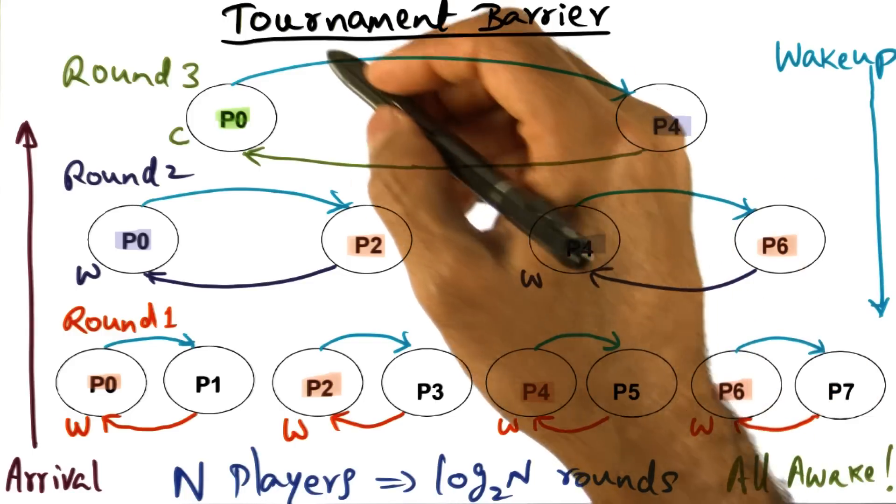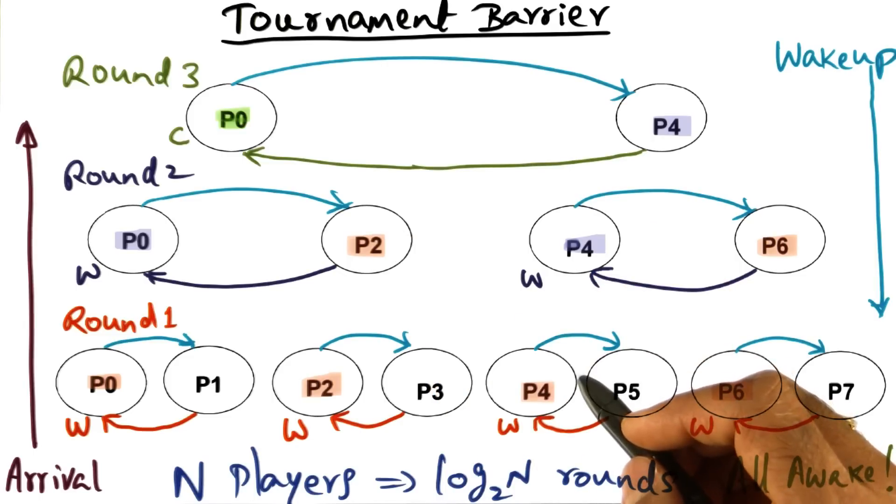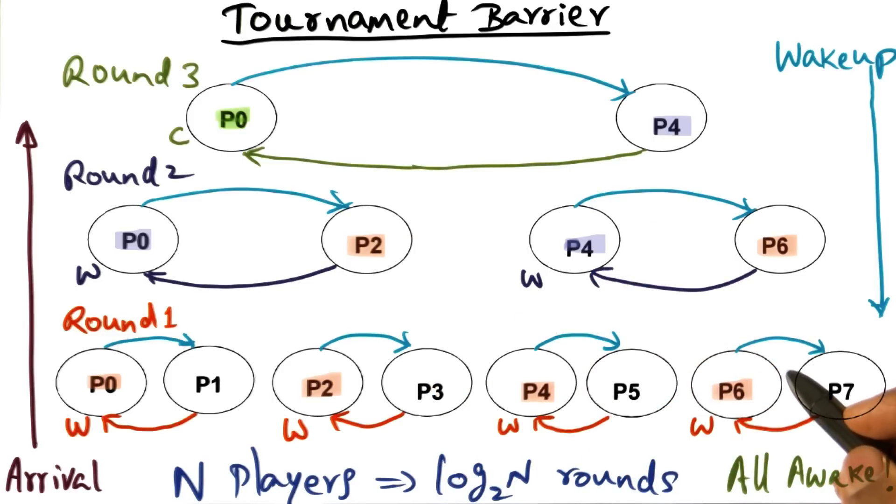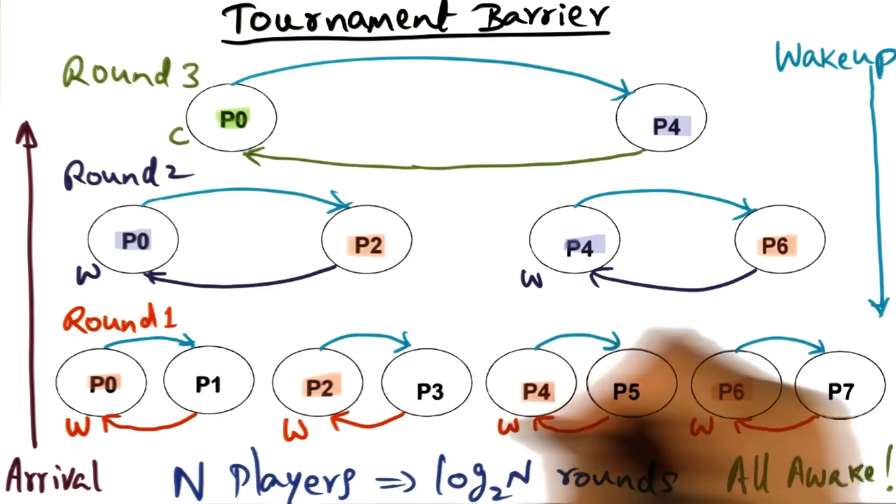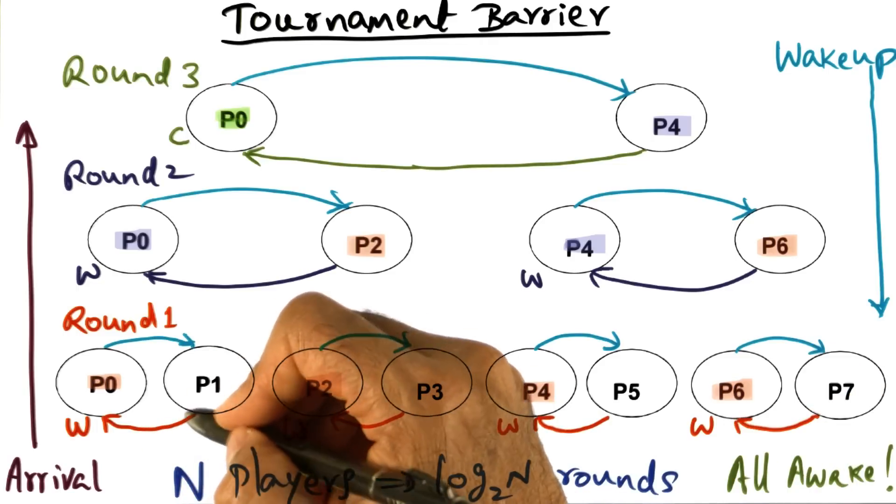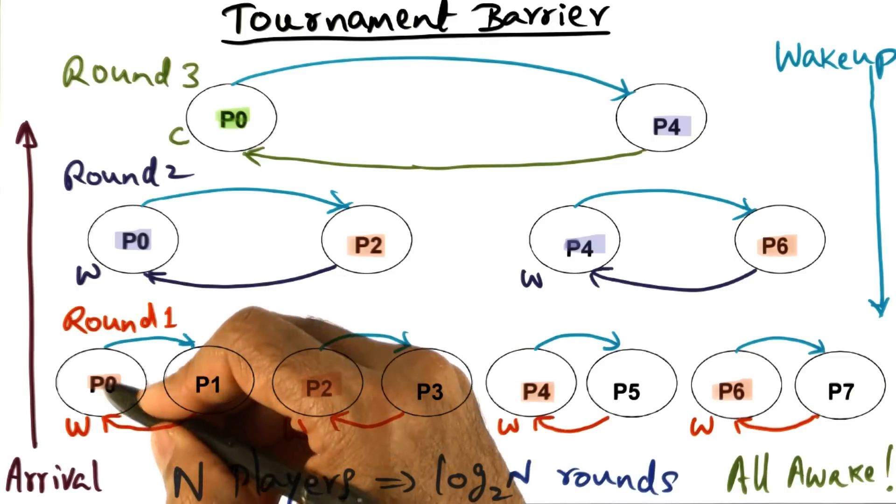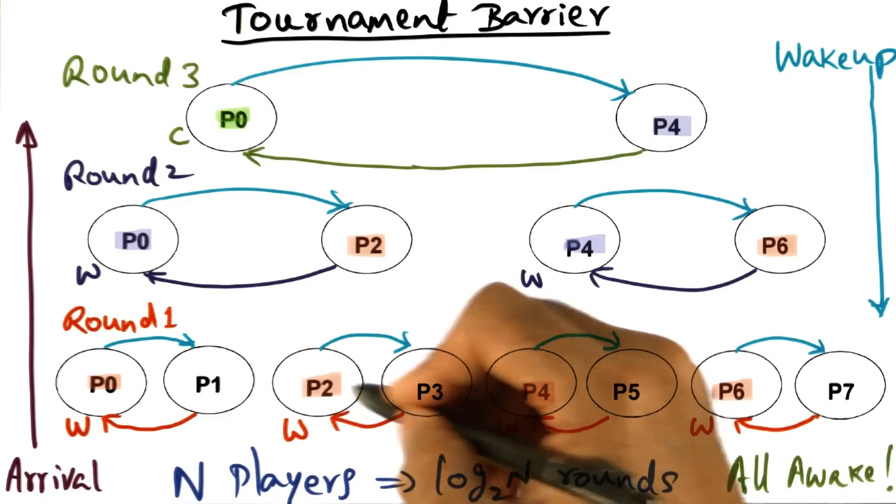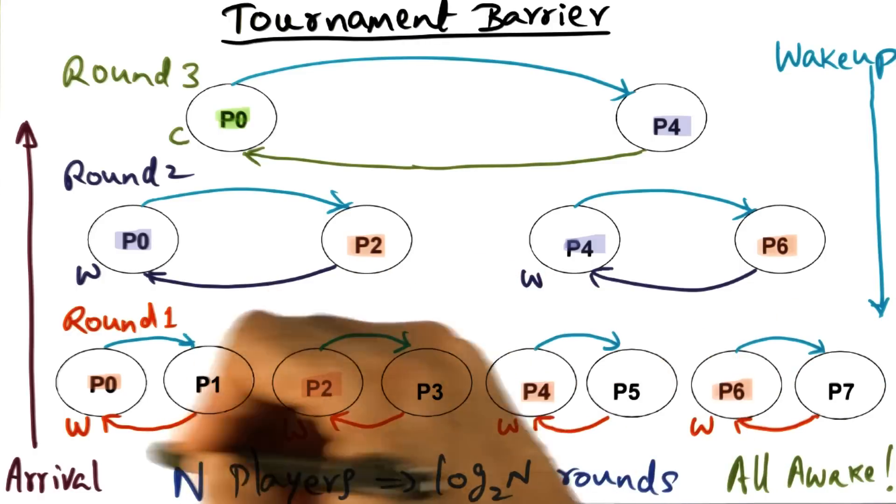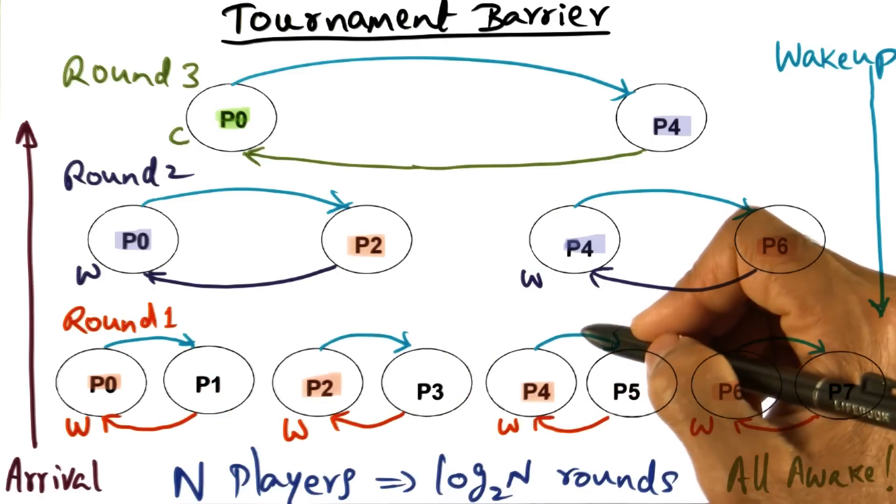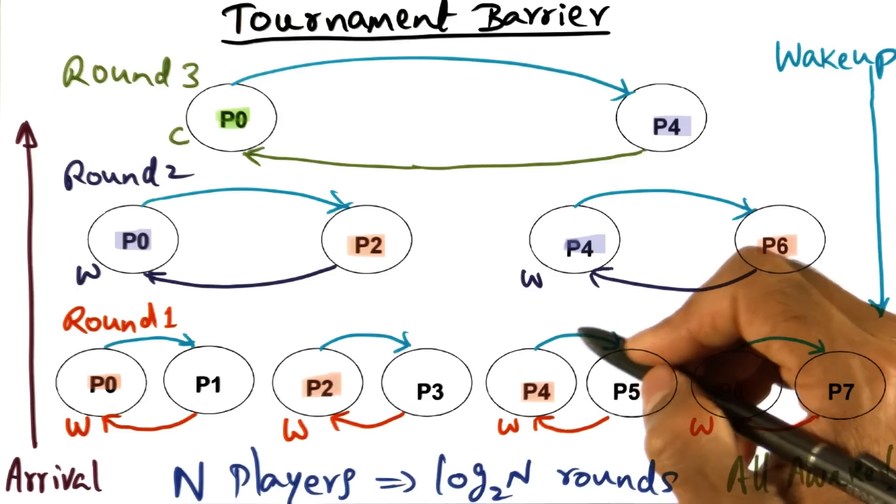The other important point I want you to notice is that the tournament barrier works even if the processor is not a shared memory machine. Because all that we're showing here is a message communication. P0 is waiting for a message from P1 and so on. You can think of them as messages.